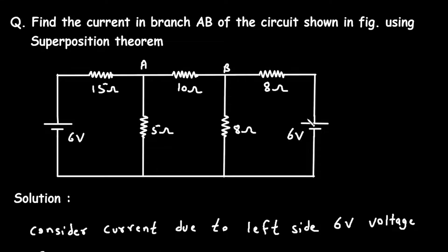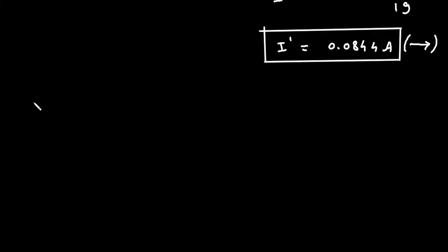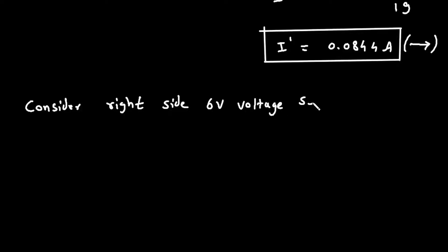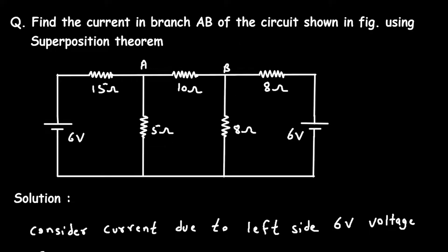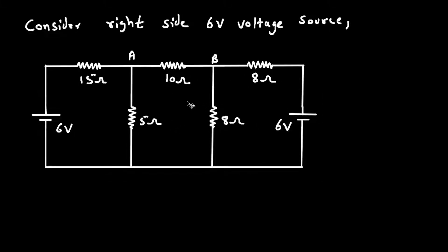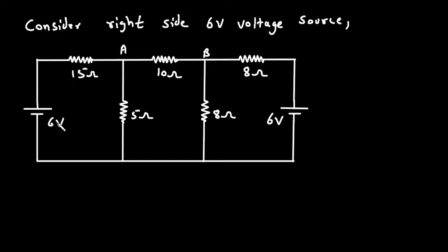Next, we consider the right side 6V voltage source. When we consider this source, we turn off the other source, which is again replaced by a short circuit. According to the polarity of this voltage source, the direction of the current I double prime will be leftward. Let's call the total current I2. Here we can see the 15Ω and 5Ω are connected in parallel.